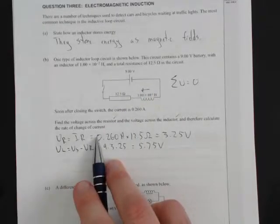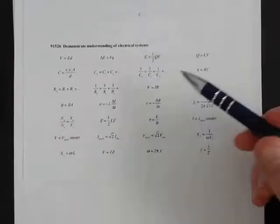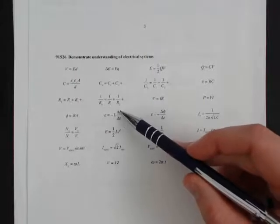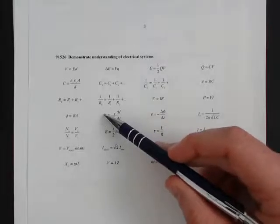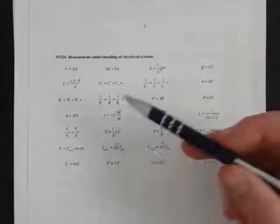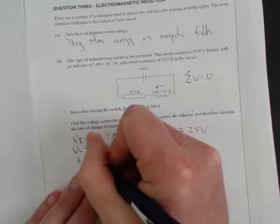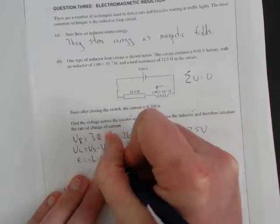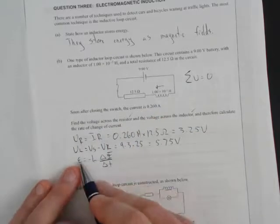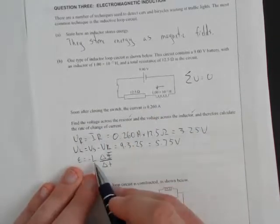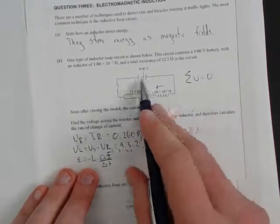Now find the rate of change of current. Looking at our formula sheet for expressions containing inductance: EMF = −L × ΔI/Δt. The EMF here is just our voltage through the inductor. So our voltage through the inductor is 5.75 volts. The negative sign shows the inductor voltage always opposes the supply voltage.